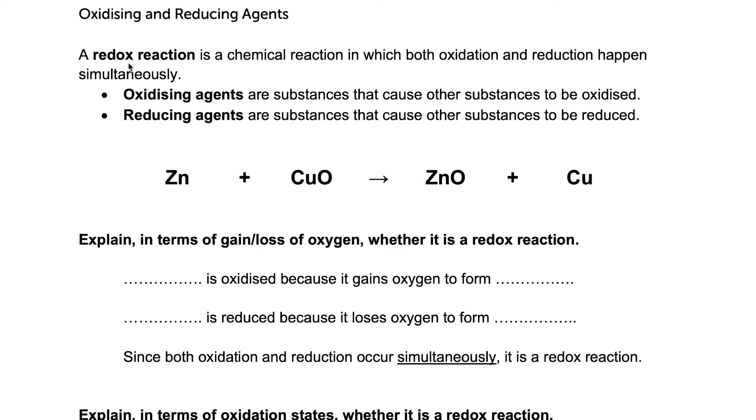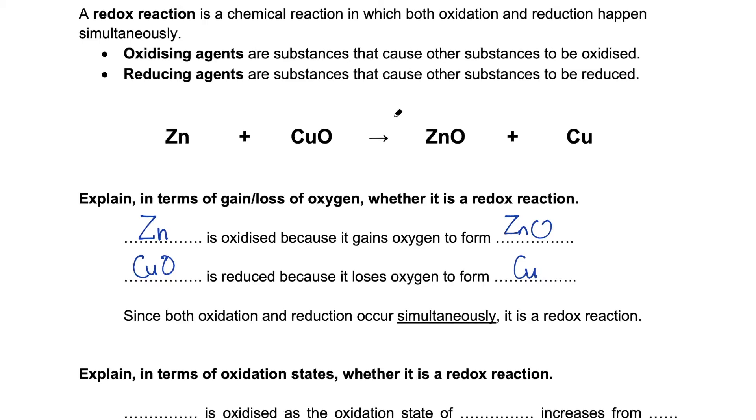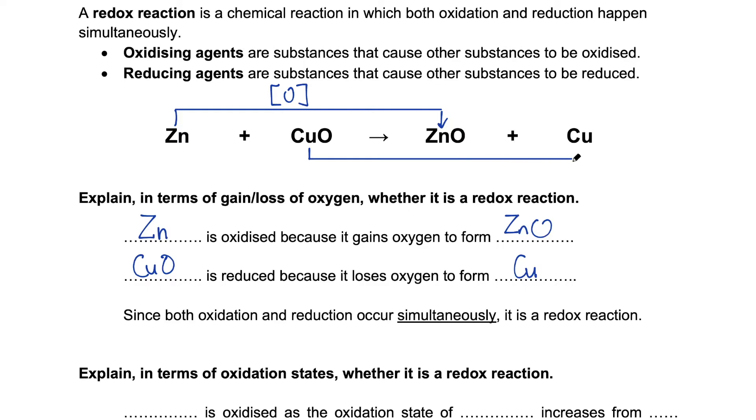We use a simple example of the reaction between zinc and copper 2 oxide. If we apply the first definition of redox reactions, we look at oxygen. Then zinc is oxidized because it had gained oxygen to form zinc oxide. Copper 2 oxide is reduced because it loses oxygen to form copper. So we have an oxidation reaction and a reduction reaction in the same equation. So this is a redox reaction.